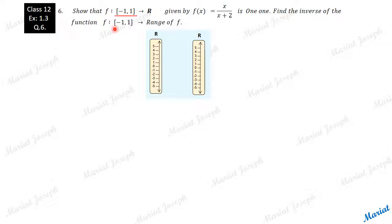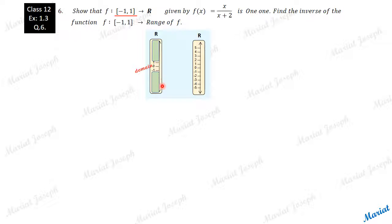The domain is given as the closed interval minus 1 to 1, which means any real number between minus 1 and plus 1. The complete set of real numbers cannot be taken as the domain. The domain is only the closed interval from minus 1 to plus 1 — this region only is the domain. No other number is included in the first set, the domain. The codomain is the complete set of real numbers, and the rule given is f(x) = x/(x+2).